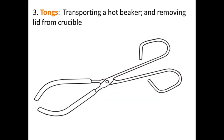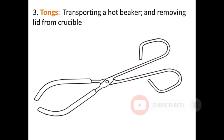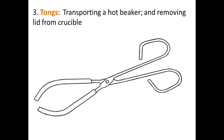Tongs are used for transporting hot beakers and removing lids from crucibles. Crucible tongs are often made using ceramic material.